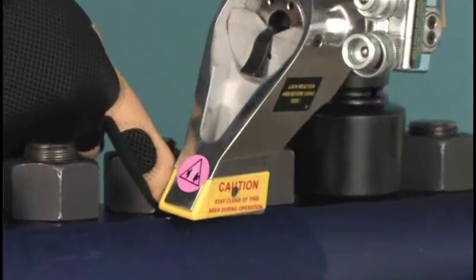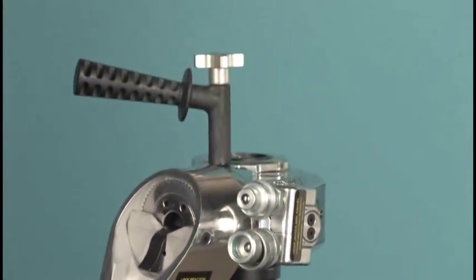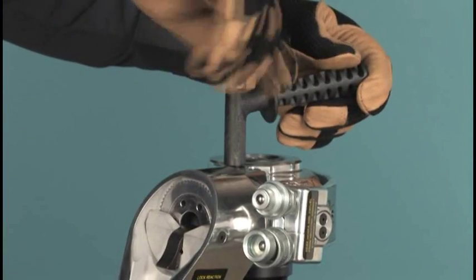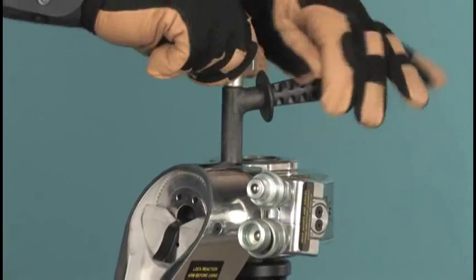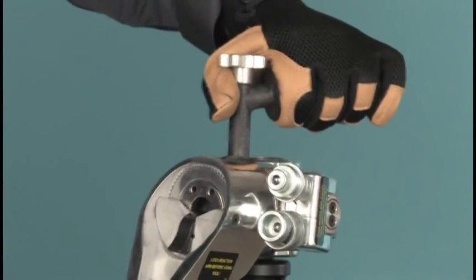The reaction arm can create a dangerous pinch point which must be avoided. A safety handle should always be attached to the wrench to provide a secure handhold out of the danger zone. If no handle is available, the wrench should be steadied only by grasping at the reinforced hose guards.